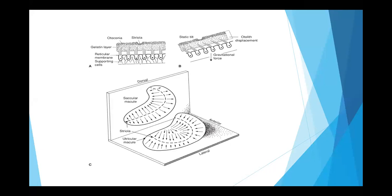The crystals sit on the otolith membrane — they stick to it and add weight to it. If there were only the gelatinous substance, gravity would not be sufficient to pull the membrane. The calcium carbonate crystals add mass so that when there is movement, the membrane lags behind due to inertia. For example, when bending, the otoconia pulls the membrane downward, causing excitation. When moving in a straight direction, the mass creates inertia, so the otolith membrane moves in the opposite direction to the motion — one hair cell excites, the other inhibits.